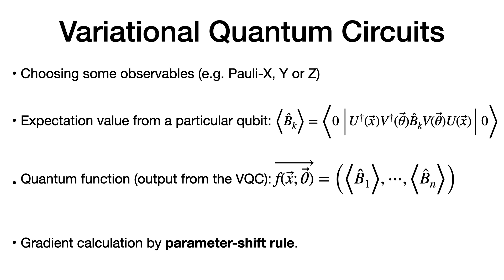The general form of a VQC requires choosing observables to project quantum information into classical data. If you have n qubits, you can measure each qubit to get an observable. Measuring all n qubits yields n expectation values — classical floating-point numbers — which can be treated as probabilities or action values in reinforcement learning.